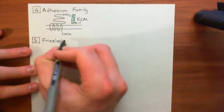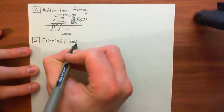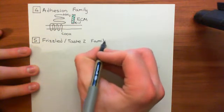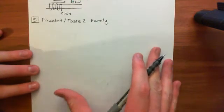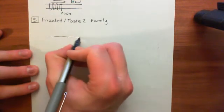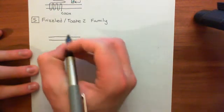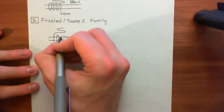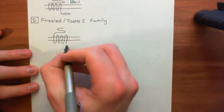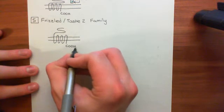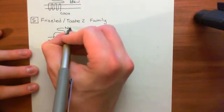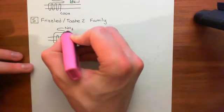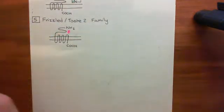The fifth and final family is the Frizzled/Taste2 family of G-protein coupled receptors, named after its two most famous members. This family essentially contains all G-protein coupled receptors that don't fit anywhere else. They have reasonably large amino terminal domains, seven membrane-spanning alpha helices, the carboxylic acid terminus intracellularly, and their ligands are small or free molecules that bind to the amino terminal domain.